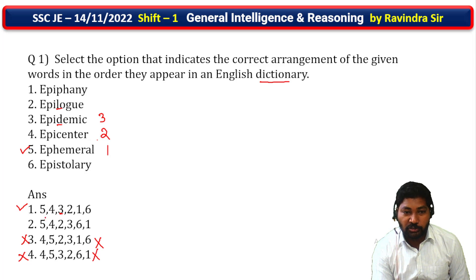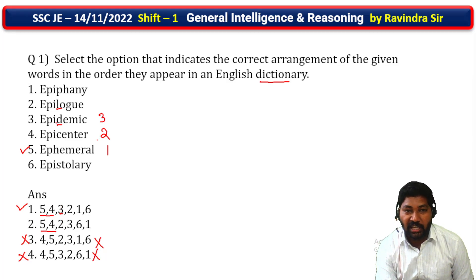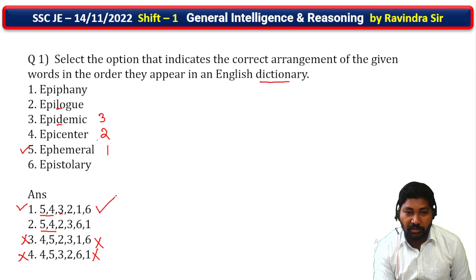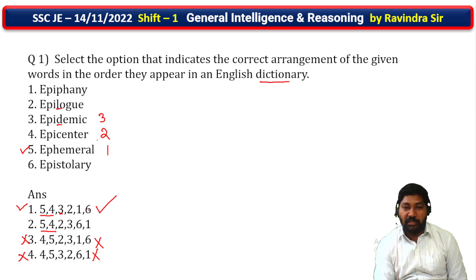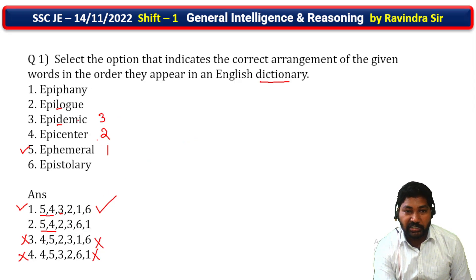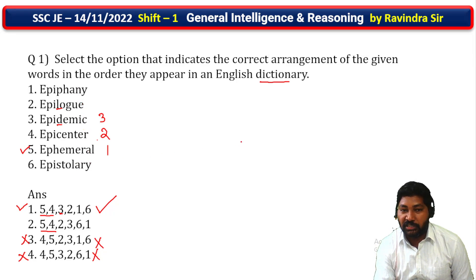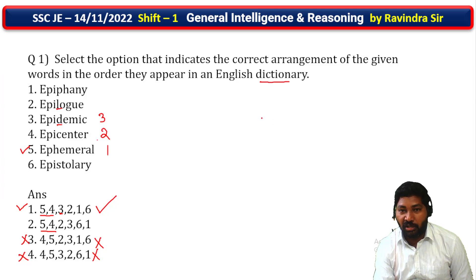Comparing the first and second options, the common sequence gives us 5-4 and 3-2. This is the answer. The third option is next, and the first option is the correct answer based on dictionary order. You can see how easy it is to solve — no need to waste time in the exam.